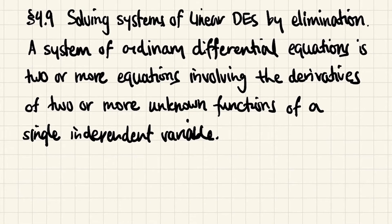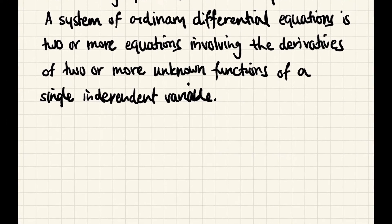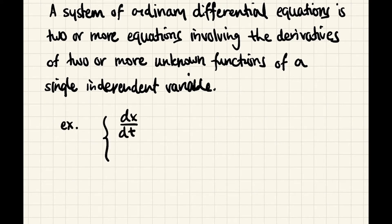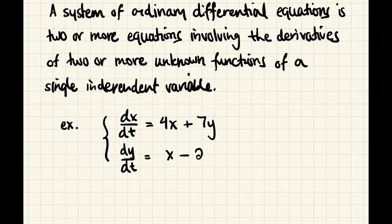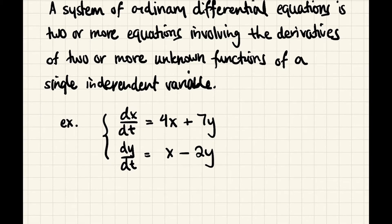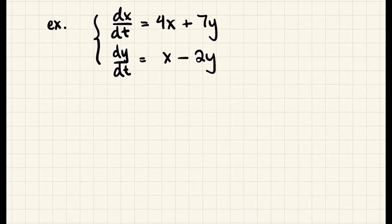An example of a system of ordinary differential equations: say some unknown function x of t has its derivative equal to 4x plus 7 times some unknown function y of t. At the same time, the derivative of y equals the unknown function x minus 2 times the unknown function y. The solution here would be a set of differentiable functions x and y, both functions of t, sharing a common interval of definition.